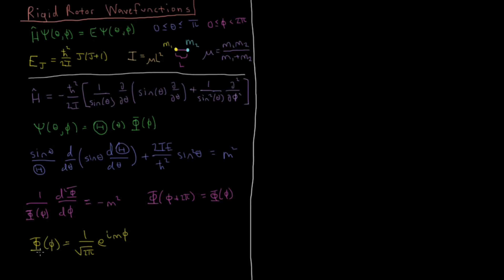So we might write phi m of phi. And this m has values which look like 0, plus or minus 1, plus or minus 2, etc. And this normalization constant of 2 pi, you might guess, comes from the fact that this function is periodic over the region of 2 pi, and you would be correct.